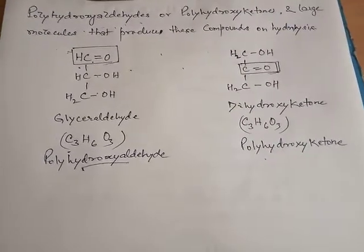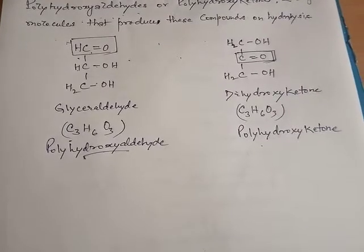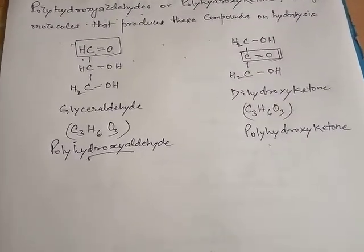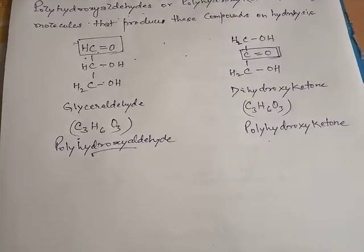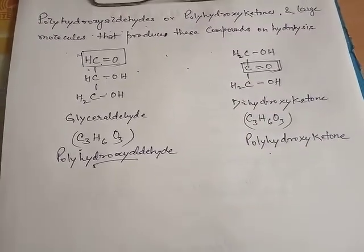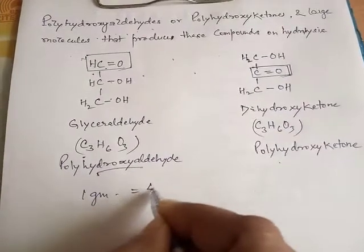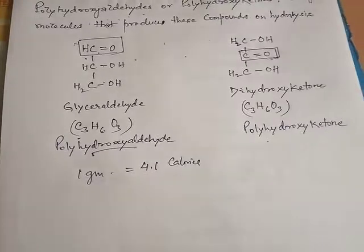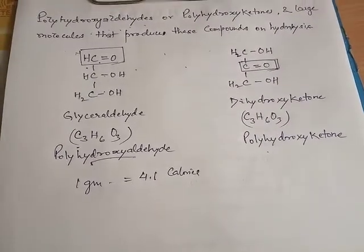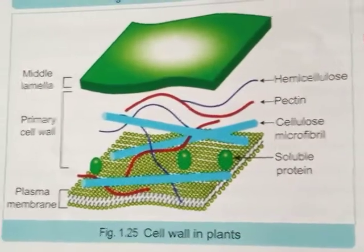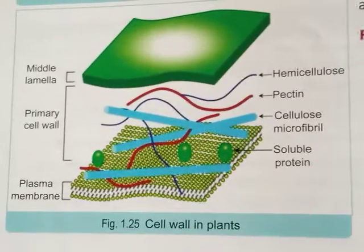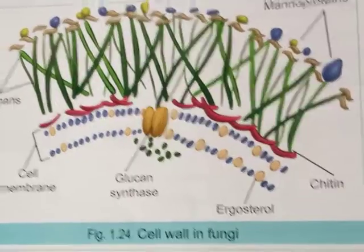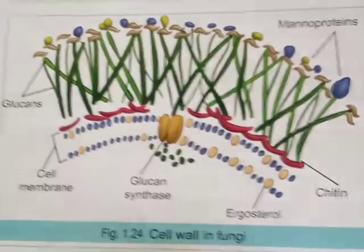Carbohydrates are present in all life forms — microorganisms, plants, and animals — where they perform different functions. They serve as the chief source of energy: oxidation of 1 gram of carbohydrates releases about 4.1 calories of energy. Carbohydrates also participate in structure, such as cellulose and chitin. Cellulose forms the cell wall in plants, whereas chitin forms the fungal cell wall — both are types of carbohydrates.